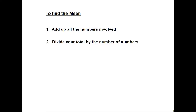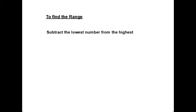The methods we require to find the mean and the range are quite straightforward. For the mean, if we have a list of numbers, the first thing we do is add up all the numbers to get a total. The second step is to divide the total by the number of numbers. To find the range, it's even more straightforward — we simply subtract the lowest number in the set from the highest.